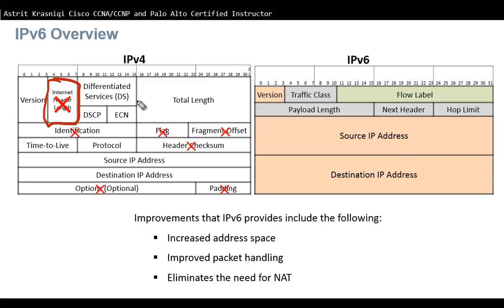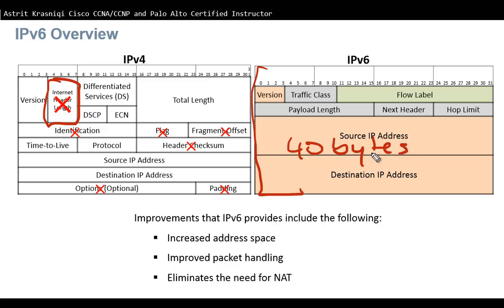The next field is Internet Header Length. This field does not exist in IPv6 because the IPv6 header is always 40 bytes. Since we always know how big the header is, there is no need to identify it, so that field has been removed.